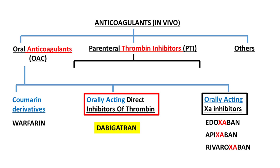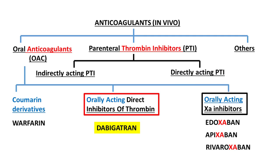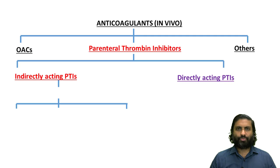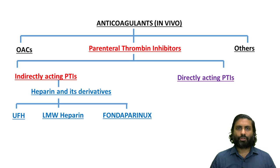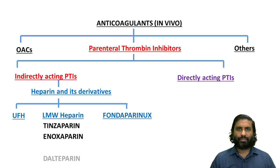The parenteral thrombin inhibitors can be classified into the indirectly acting and the directly acting parenteral thrombin inhibitors. The indirectly acting parenteral thrombin inhibitors include heparin and its derivatives: unfractionated heparin, low molecular weight heparin, and fondaparinux. Low molecular weight heparin includes tinzaparin, enoxaparin, and dalteparin.